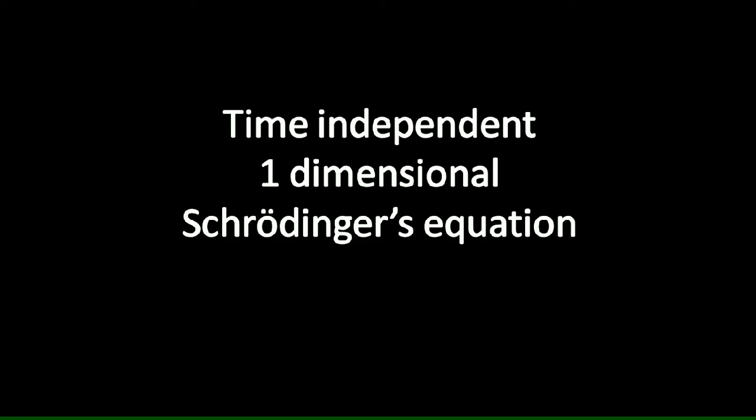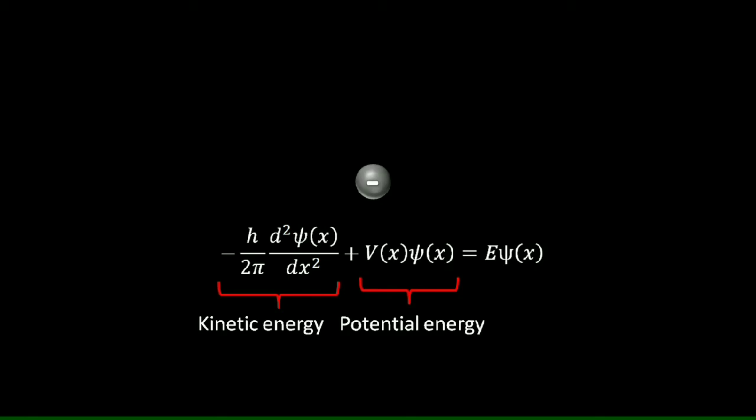To study quantum mechanical systems like electrons in an atom, Schrödinger's equation becomes significant. It's similar to the conservation of energy, where this term represents the kinetic energy of the system. This term represents the potential energy, and E represents the total energy of the system.